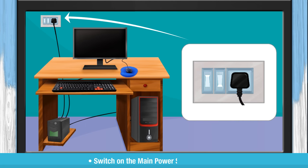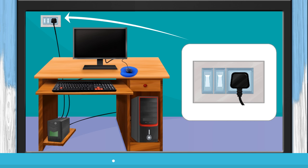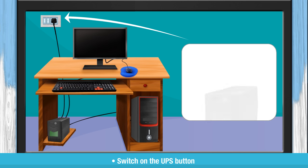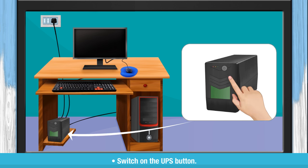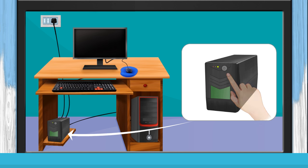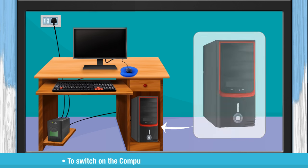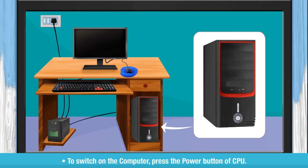Switch on the main power supply button. Switch on the UPS button. To switch on the computer, press the power button of CPU.